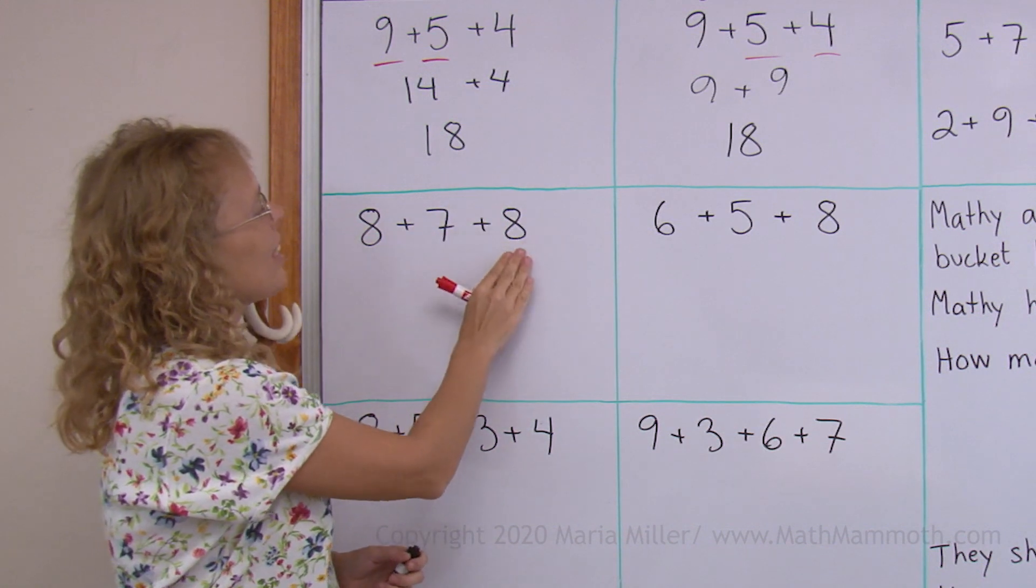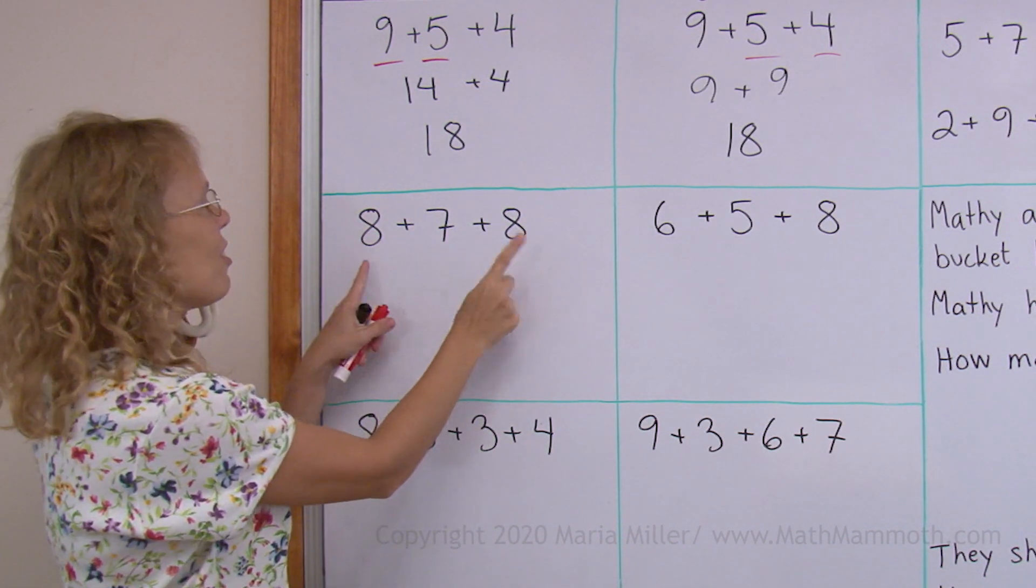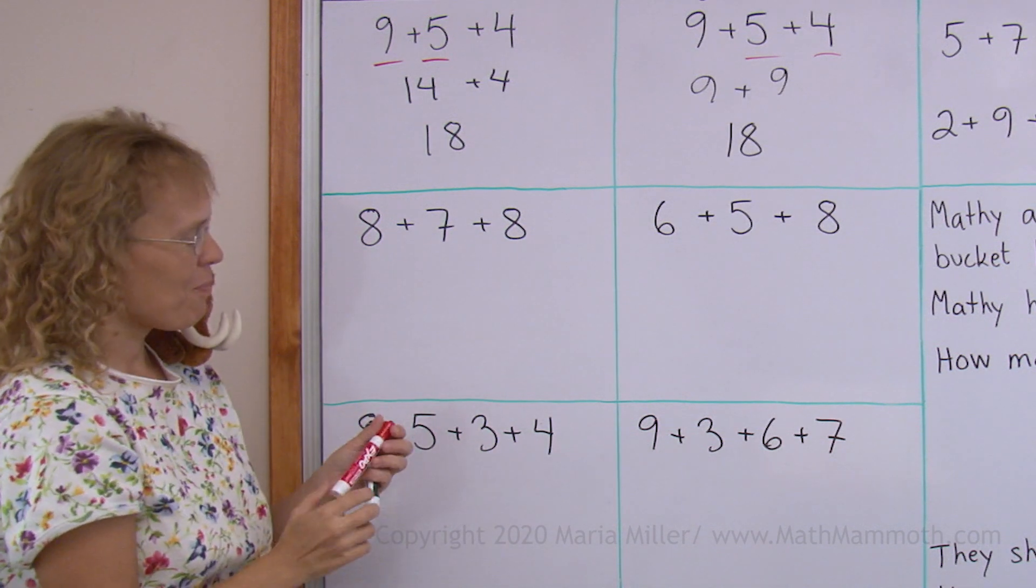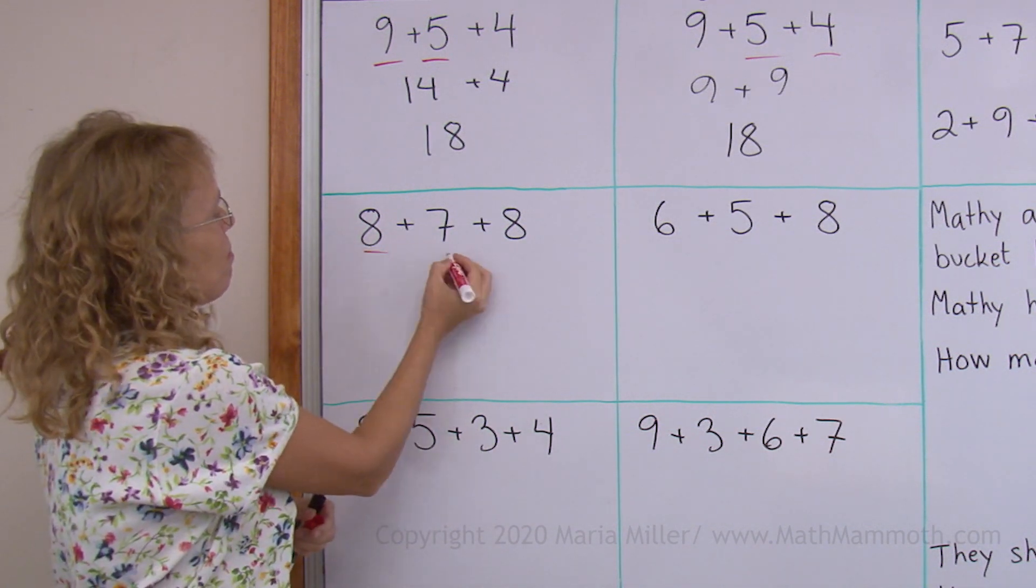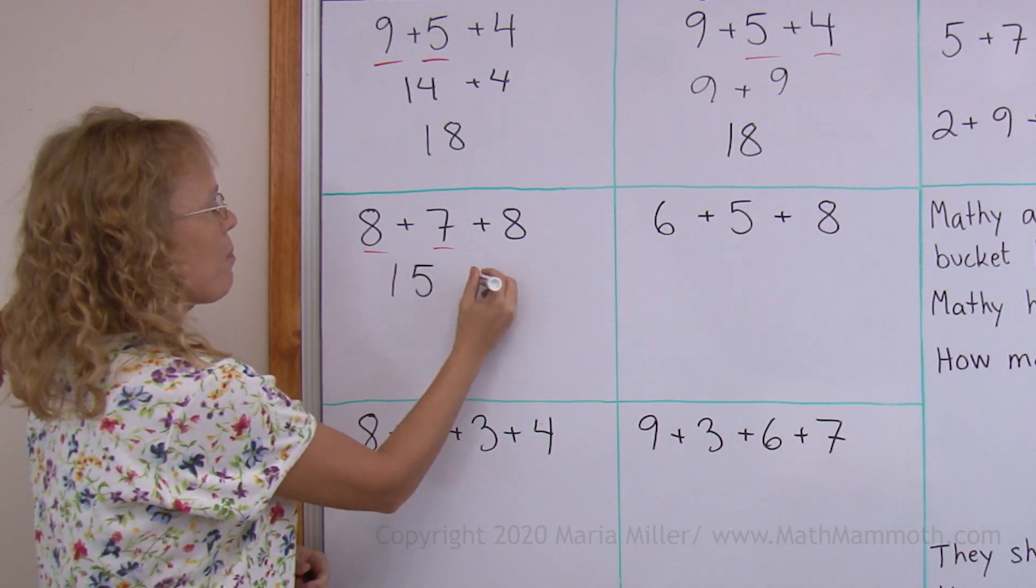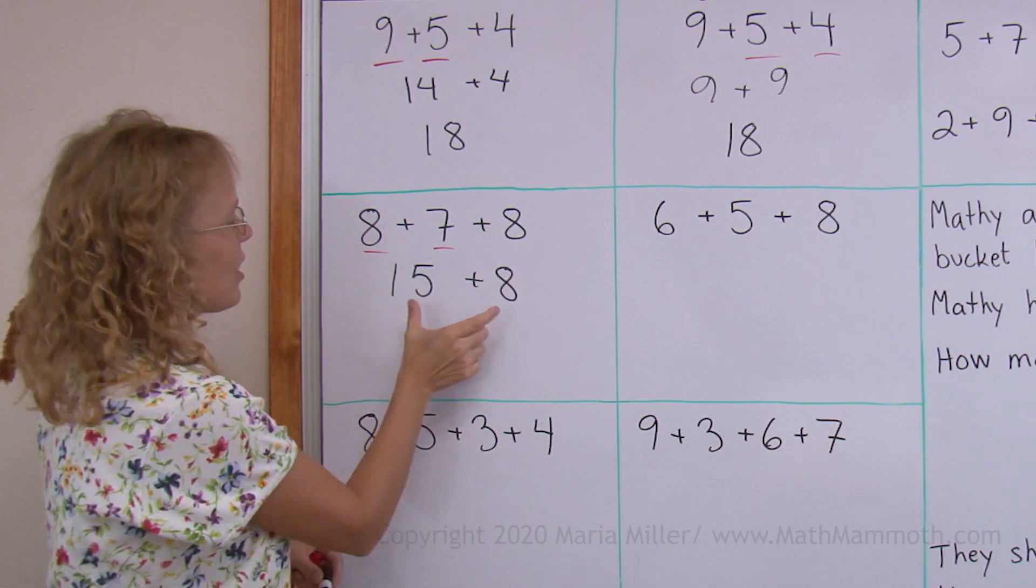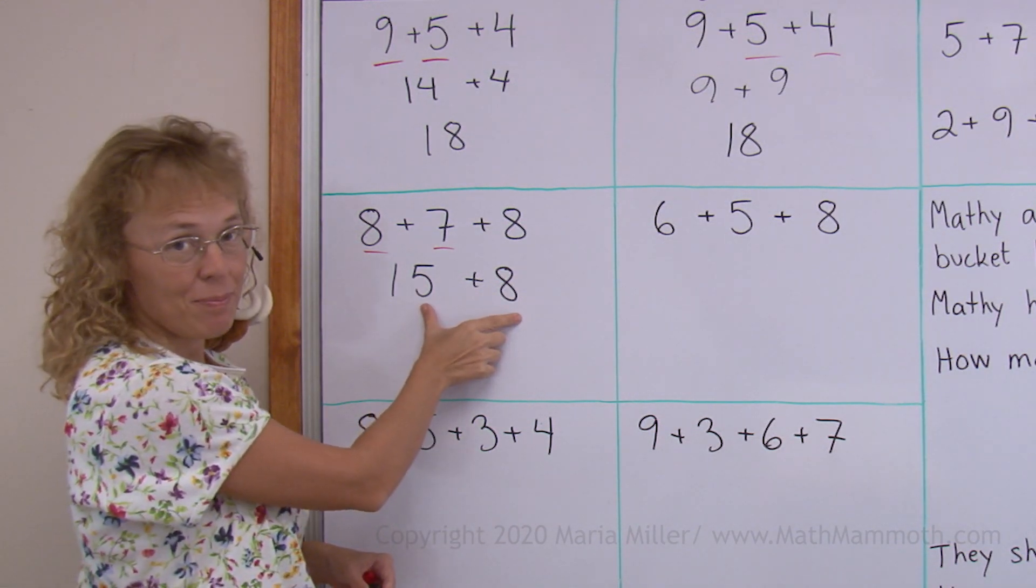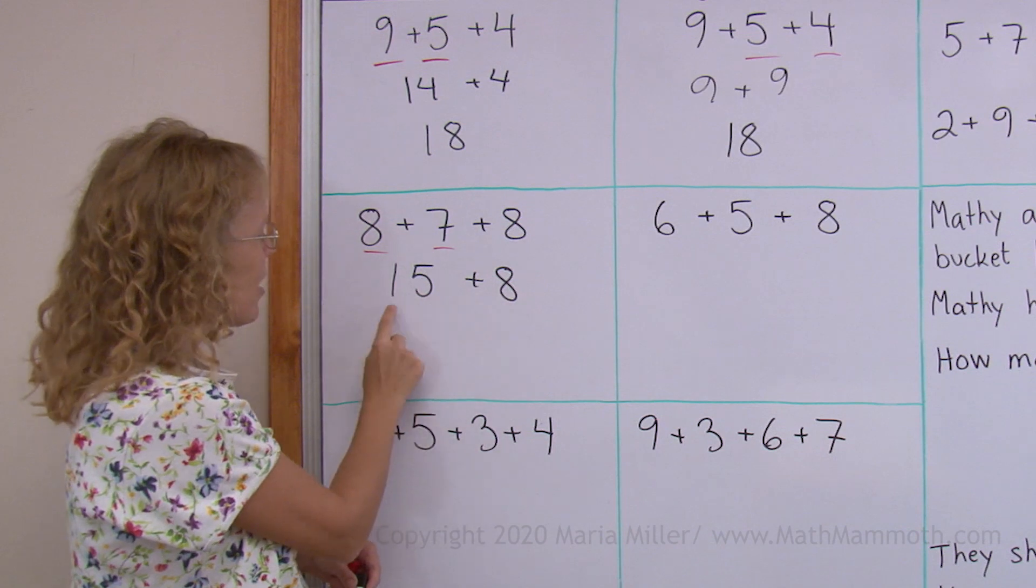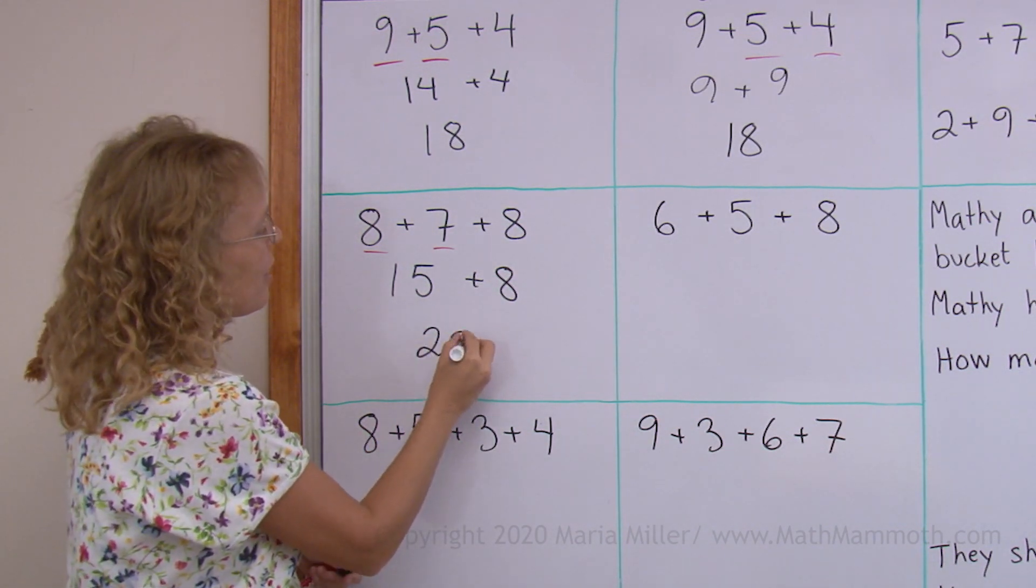8 plus 7 plus 8. You can choose if you want to add 7 and 8 together or 8 and 8 together, okay? Now let's say that I add 8 and 7. So I get 15. And then 15 plus 8. For this, you would add 5 plus 8. That's 13. And then there's one more 10 here, 10 and 13. So we get 23.